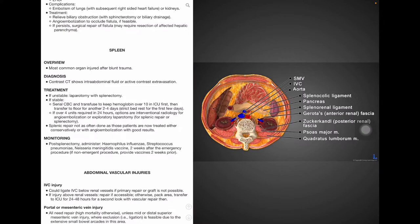Our next type of injury is abdominal vascular injuries. And there are two types, the inferior vena cava injury and the portal or mesenteric vein injury. For the inferior vena cava injury, when primary repair or graft is not possible, IVC ligation below the renal vessels is indicated. For injury above the renal vessels, repair is preferred if it is accessible. But if not, patient is transferred to the ICU for 24 to 48 hours for a second look and for vascular repair. For portal or mesenteric vein injury, this has a high mortality. And because of this, all conditions need repair. The exception is a mid or distal superior mesenteric vein injury, in which case ligation is feasible.